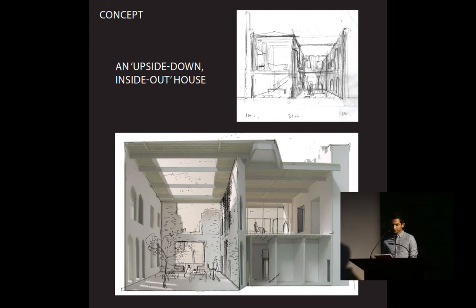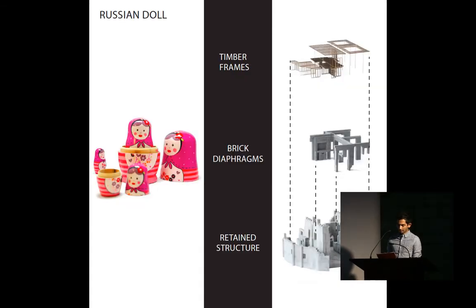The architects flipped the conventional house arrangement by having bedrooms on the ground floor and kitchen and living areas upstairs. This took advantage of the increased ruination and open structure of the upper level, maximizing light and allowing it to flood into the living spaces. Another concept used was that of the Russian doll. The renovation can be divided into three main components: the existing structure, a new brick diaphragm which stabilizes the ruin, and a timber joinery which forms the new ceiling and room partitions. These are all inserted within one another, acting as a glue, consolidating the building.